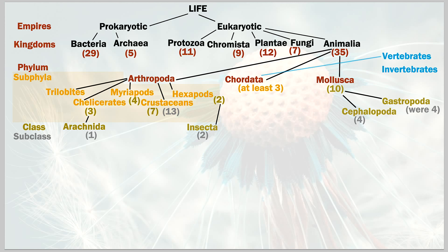Now let's go to chordata. Chordata has at least three subclasses — it's hard to determine exactly, but the point is just to go down these branches. The most recognizable subclass is vertebrata — creatures with bones, with a vertebrae. There are two other categories in chordata that aren't vertebrates, and one that is. Vertebrata has nine classes.